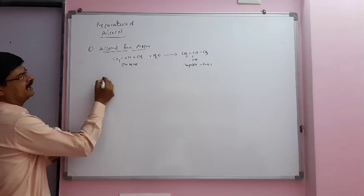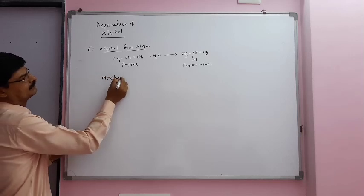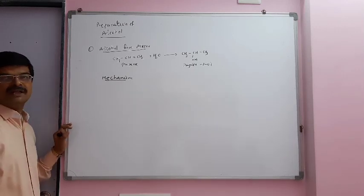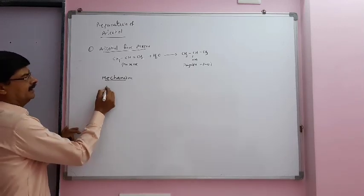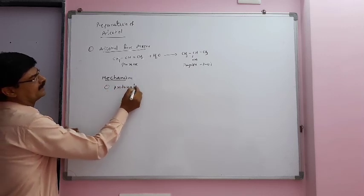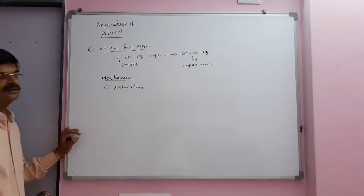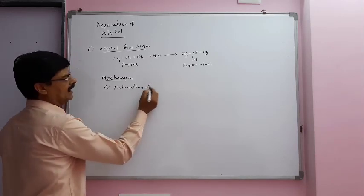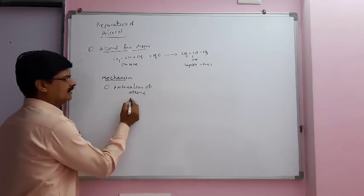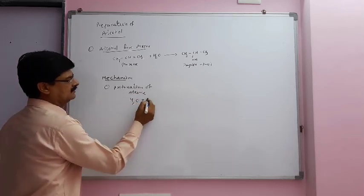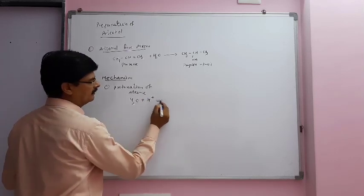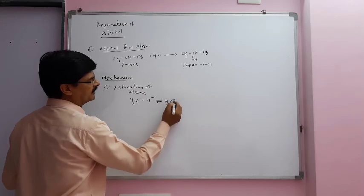Now let's study the mechanism of this reaction to form propan-2-ol. In the first step, protonation of alkene takes place. In this step, water plus H+ forms acid, giving H3O+.